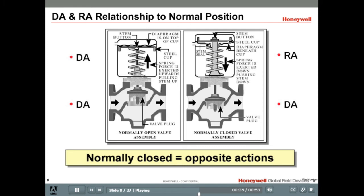On the right side of the diagram, a direct acting valve with a reverse acting actuator has the natural spring force exerting downwards, thereby keeping the plug down and the valve closed. When actuator pressure is applied, the force will push the diaphragm upwards, pulling the valve stem and plug up. As the plug goes up, the valve opens.